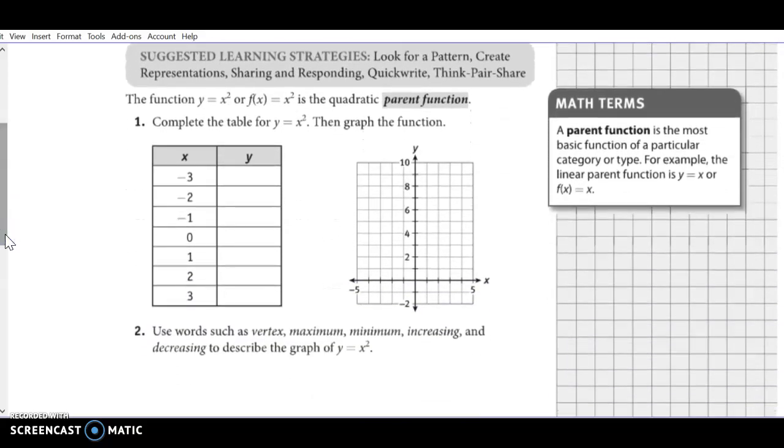Remember that the quadratic parent function is y equals x squared, or f(x) equals x squared. When we do this, we always start at the origin. You can use your calculator, or you can just plug in your number and square it. So if we square negative 3, we get 9. Square negative 2, we get 4. Square negative 1, we get 1. And then remember that these are buddy points.